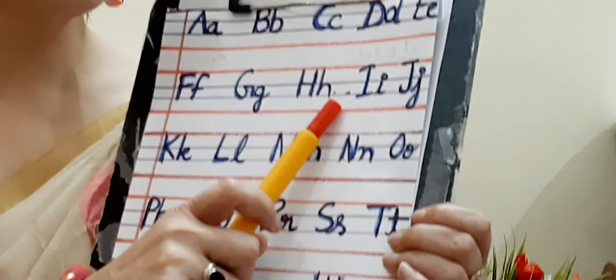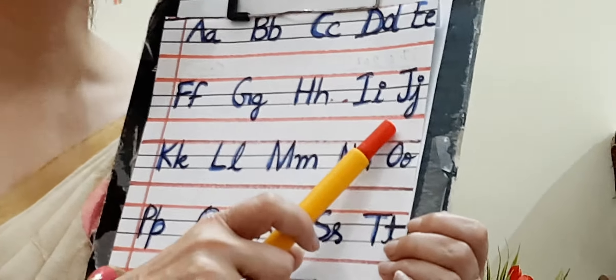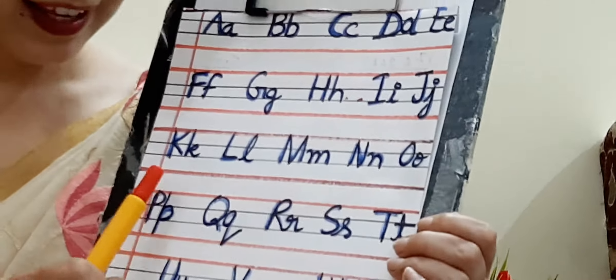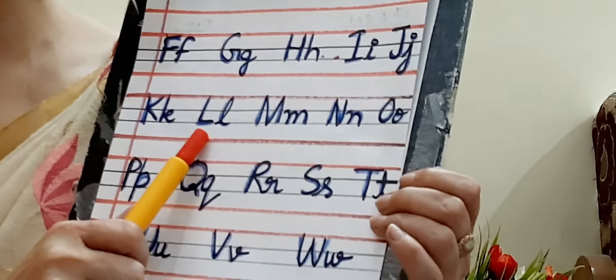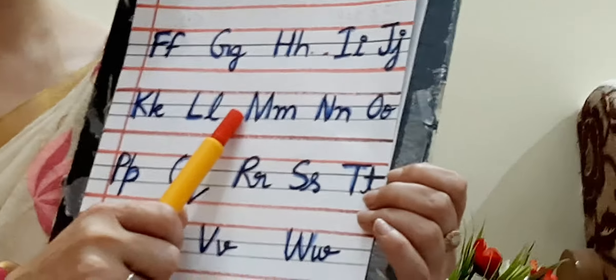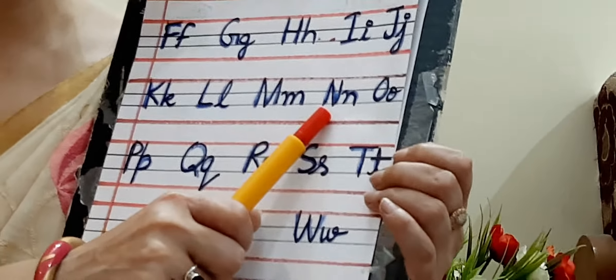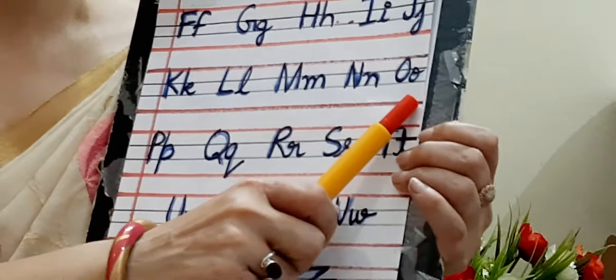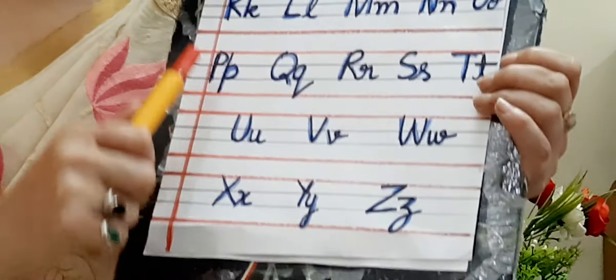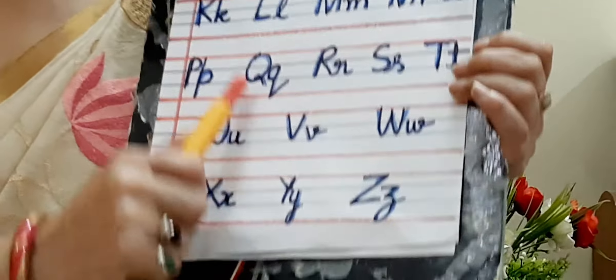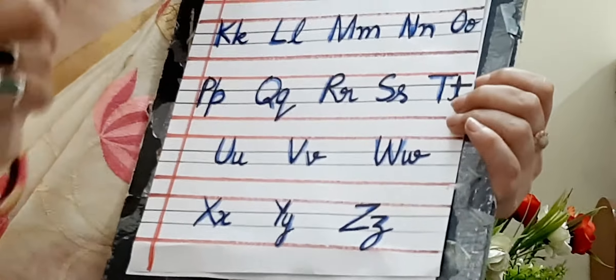Capital H, small h. Capital I, small i. Capital J, small j. Capital K, small k. Capital L, small l. Capital M, small m. Capital N, small n. Capital O, small o. Capital P, small p. Capital Q, small q. Capital R, small r. Capital S, small s. Capital T, small t.